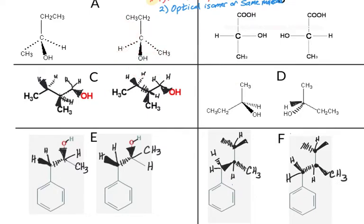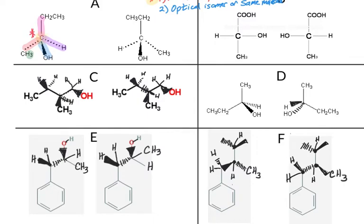Let's start with set A, looking at just the left-hand molecule. The first carbon has a CH3 group — three hydrogens, all equivalent — so that one cannot be an asymmetric carbon. The next one, where you see all the dashed lines, has a CH3, an OH, a hydrogen, and a CH2CH3 group. That CH2CH3 is different from just a CH3, so that is a fourth distinct group, making this one an asymmetric carbon.